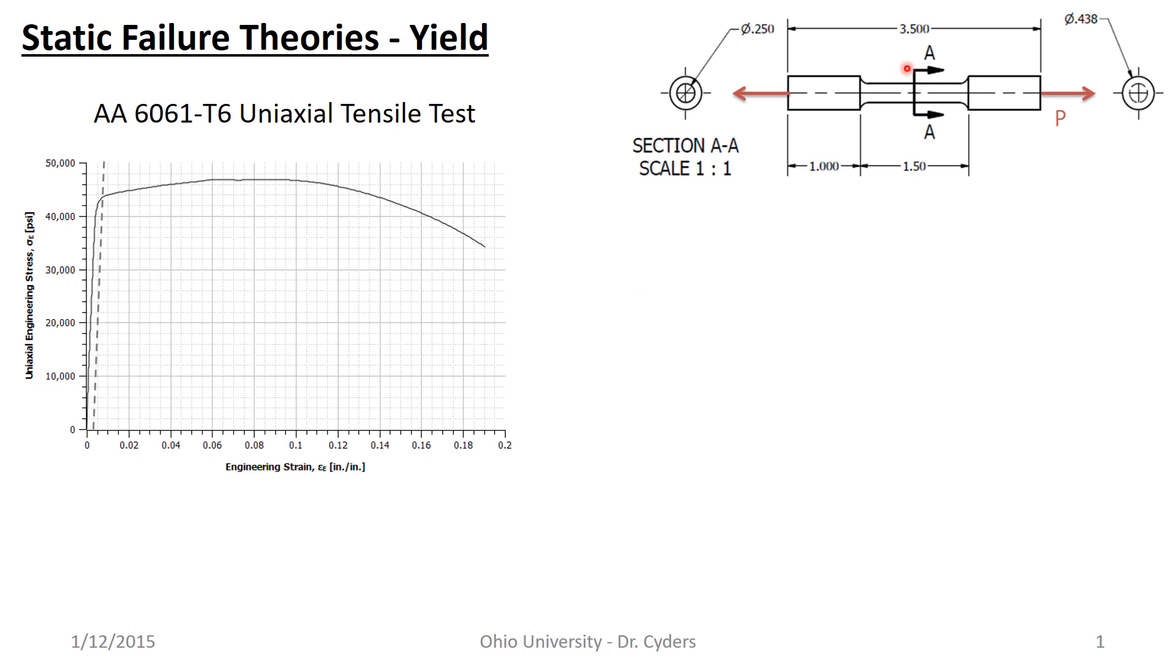You'll recall that for the basic mechanics approach, we have taken our data from a tensile test from a coupon that looks kind of like this, a uniaxial tensile test, where we basically take a round sample, pull it apart, measure the strain and the load applied, calculate the stress, and then plot the two versus each other, and we get a stress-strain curve.